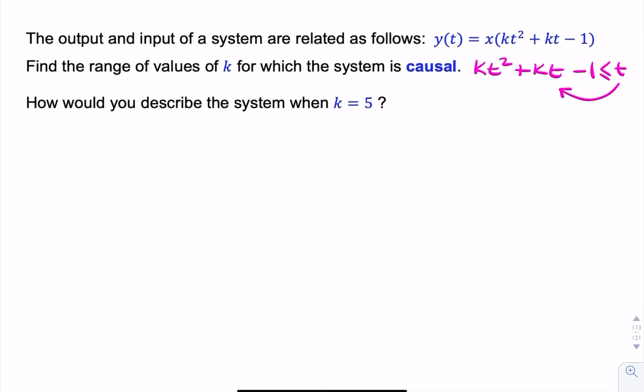We can rearrange to make an inequality with 0 on the right-hand side. And if we take t common, we have k minus 1 times t minus 1 less than or equal to 0.